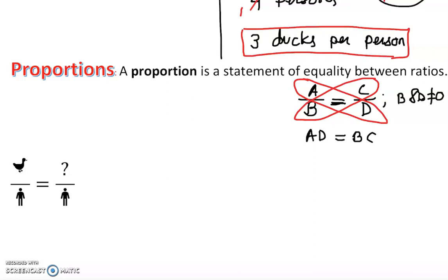Both sides must be equal in order to form a proportion. For example, if you do the cross multiplication and it gives you four equals four, then yes, it is a proportion. Proportion is a very powerful tool in our algebraic system — especially when it comes to solving application problems.